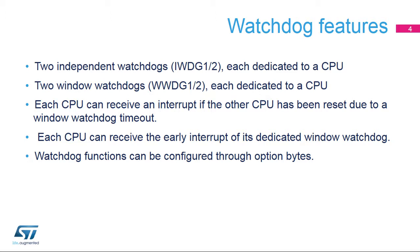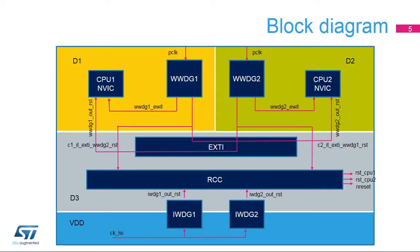Watchdog functions can be configured through option bytes. Watchdogs IWDG1 and WWDG1 are dedicated to CPU1, while watchdogs IWDG2 and WWDG2 are dedicated to CPU2.